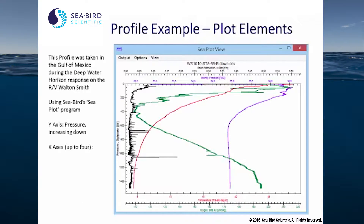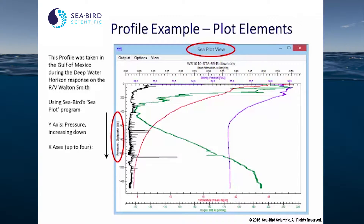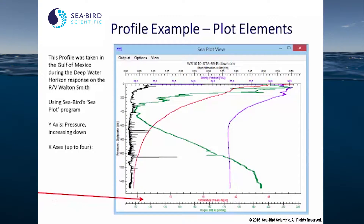Here's a plot example of a profile. In this case, we are using Seabird's C-plot to look at the data. This profile was taken in the Gulf of Mexico during the Deepwater Horizon response on the RV Walton-Smith. On the y-axis, we are looking at pressure increasing down. On the x-axis, we have up to four measurements. In this case, we are looking at a suite of instruments.